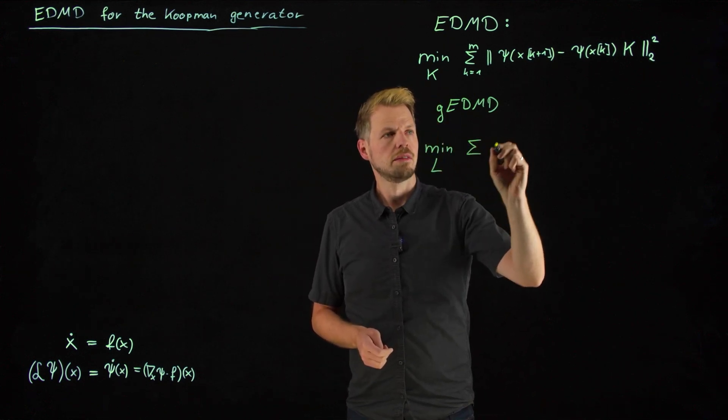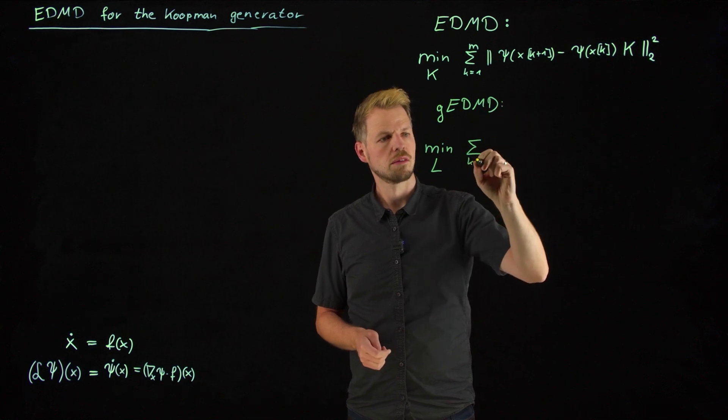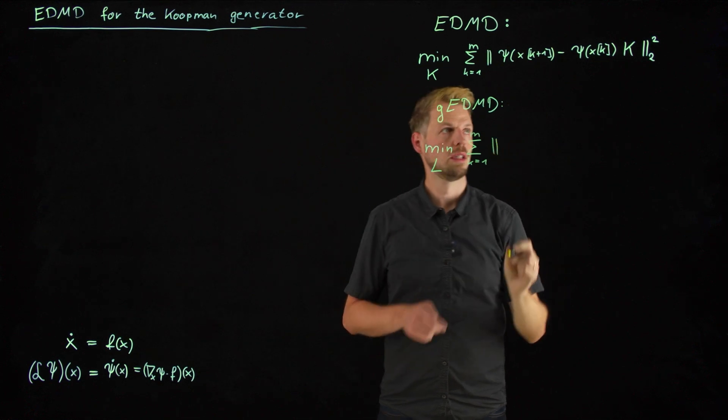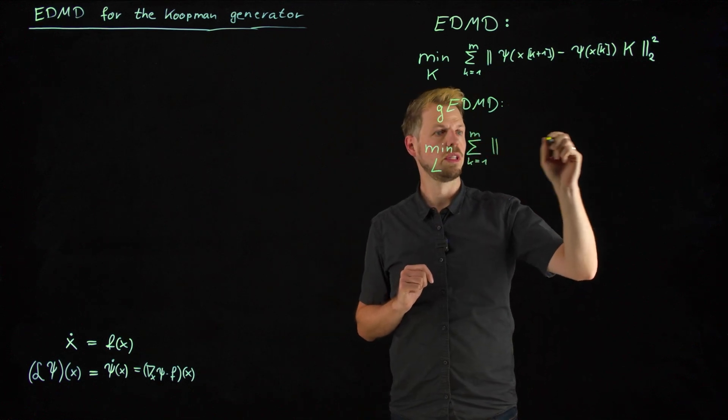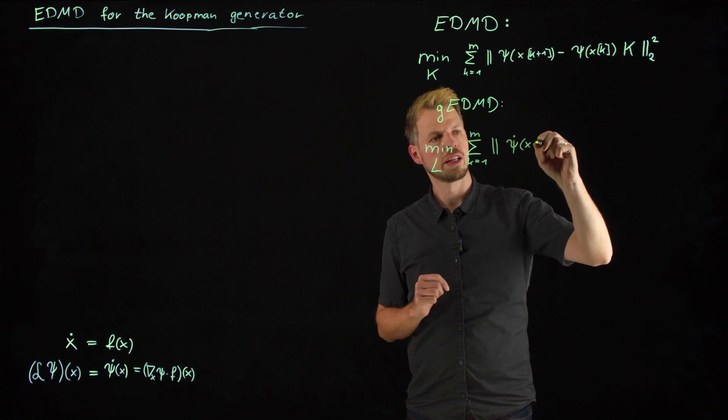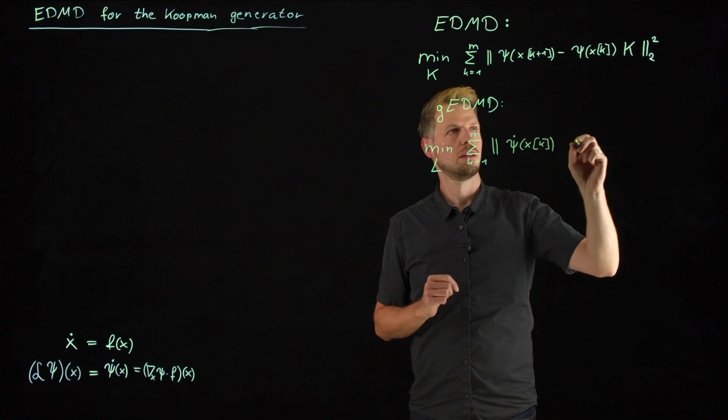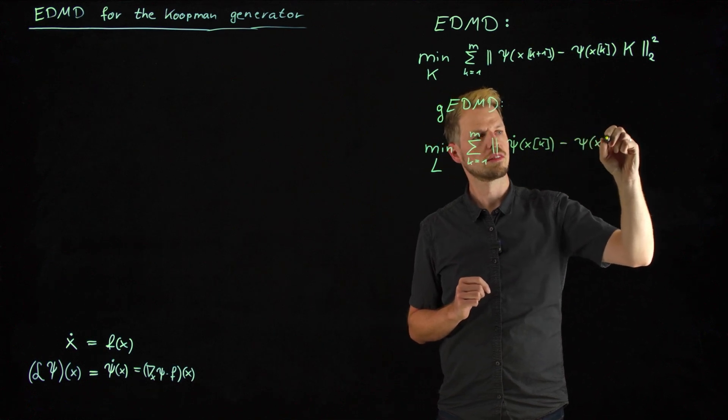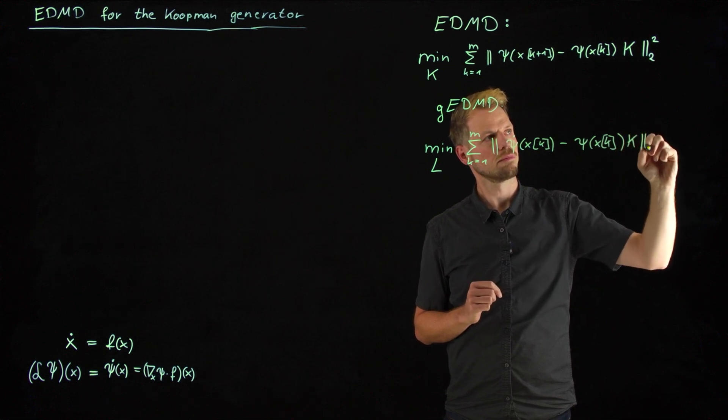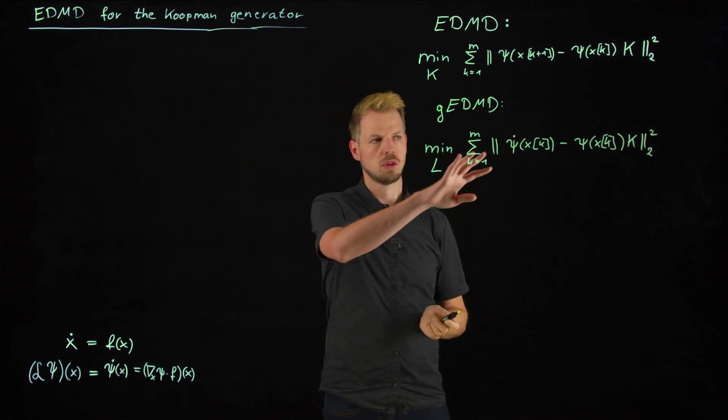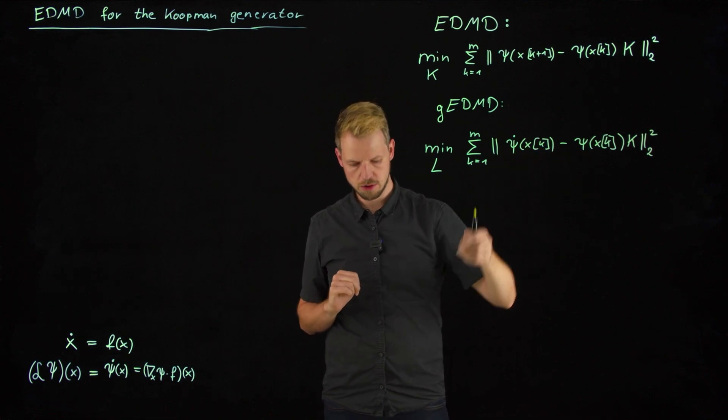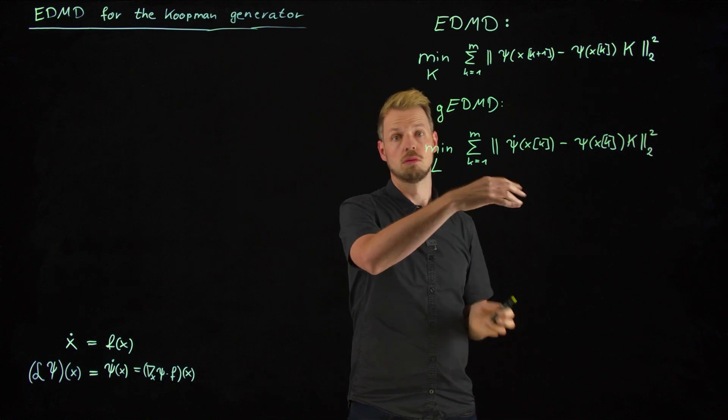And you see that this is basically the exact same thing. So we take the sum over all our samples. And now the error that we want to minimize is between the time derivative of psi of x times k minus psi of xk times k. So straightforward really. What we need to consider is what is this time derivative really, and then we can solve the problem.